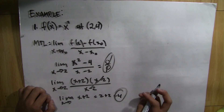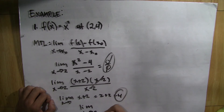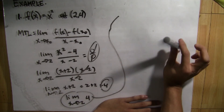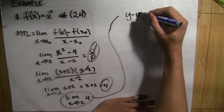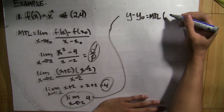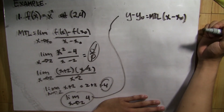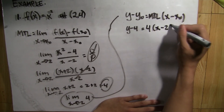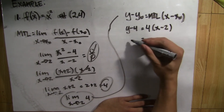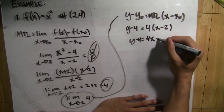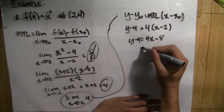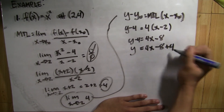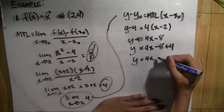Now we know the point of tangency and the slope of the tangent line. We substitute into the point-slope formula: Y minus Y-sub-0 equals slope of the tangent line multiplied by the difference of x and x-sub-0. When we substitute, we get Y minus 4 equals 4 times (x minus 2). Now we distribute 4 to x minus 2, which gives us Y minus 4 equals 4x minus 8. Using the addition property of equality, we add 4 to both sides, giving us Y equals 4x minus 8 plus 4, which simplifies to Y equals 4x minus 4.